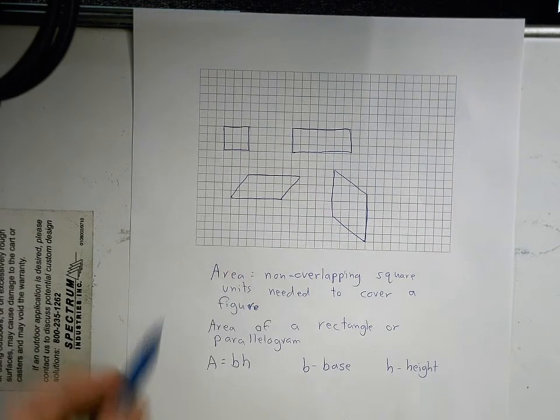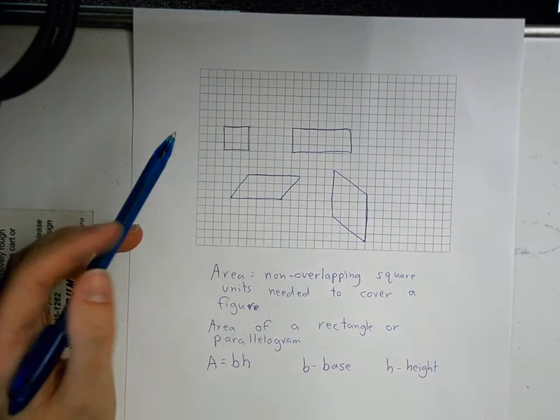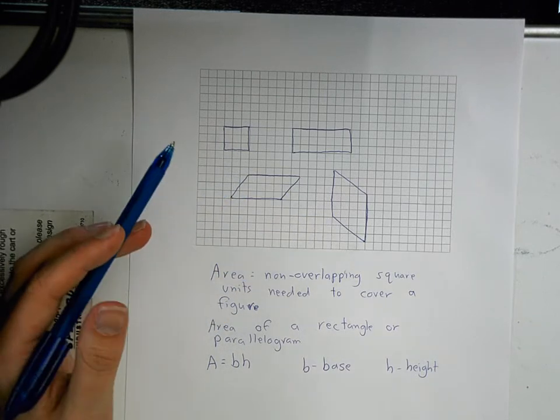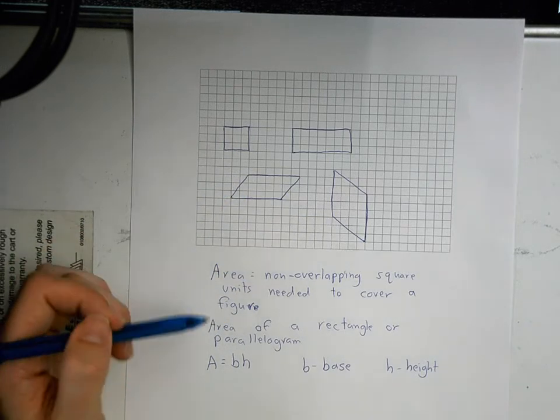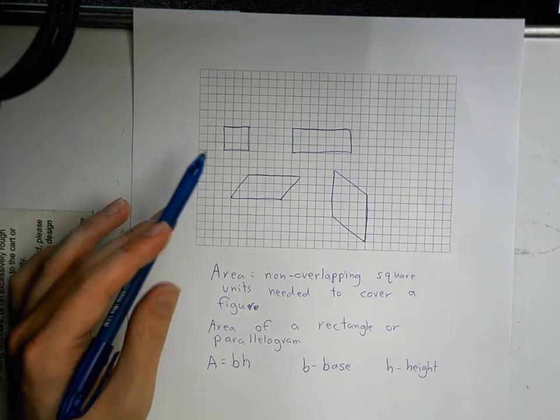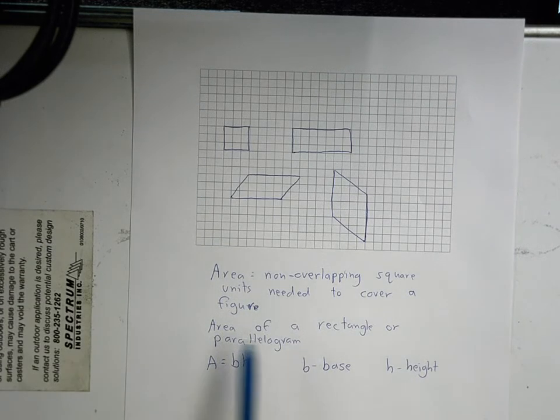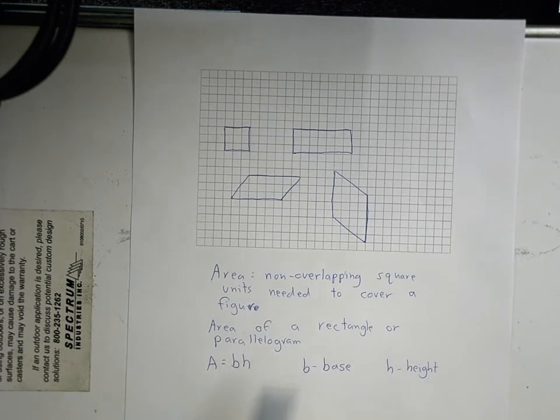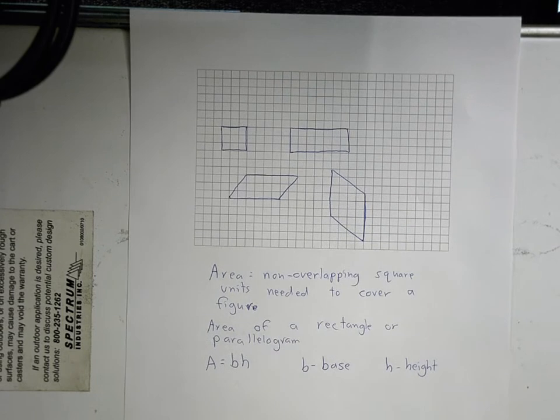Now, so when we look at these, when we use these grids, this graphing grid, it makes it real easy. Okay, but I'm going to teach you the formula right down here and then we can double check. So the area of a rectangle or parallelogram, area equals bh, base times the height. If there's nothing in between it, remember we're multiplying.